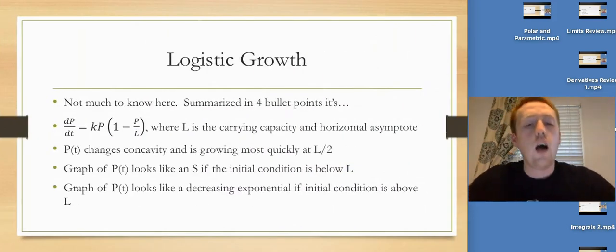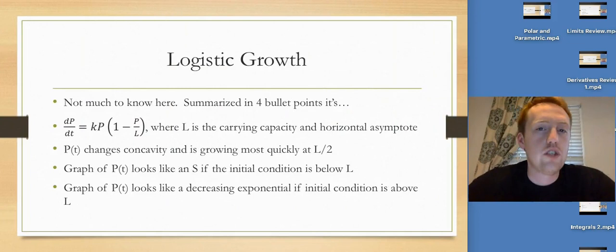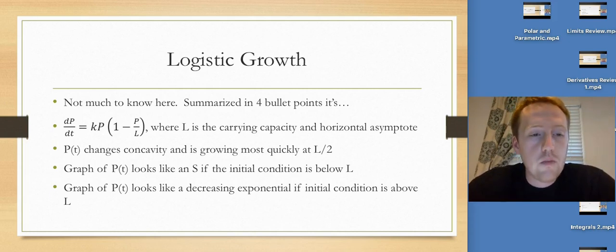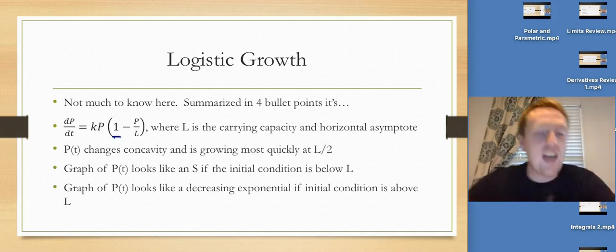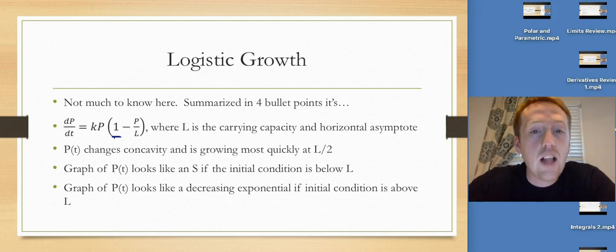Okay. I believe there's one more thing. And there is. It's logistic growth. There's really not a lot to logistic growth. It's a differential equation that you are not responsible for solving. What you are responsible for knowing are basically these four bullet points I have here. You need to know the form. And it's important the way that we have identified what the carrying capacity is, is by making sure that that number there is a one. So it's not factored out, L is going to end up being the carrying capacity. It's going to be the horizontal asymptote limit as t goes to infinity. All of those mean the same thing. It's where it levels off in the long run.